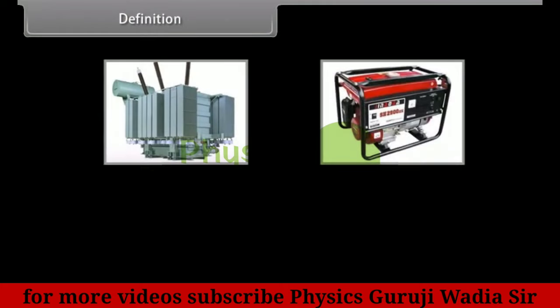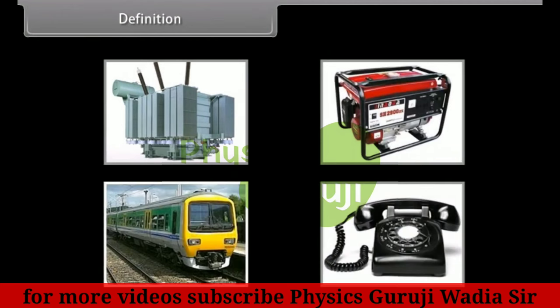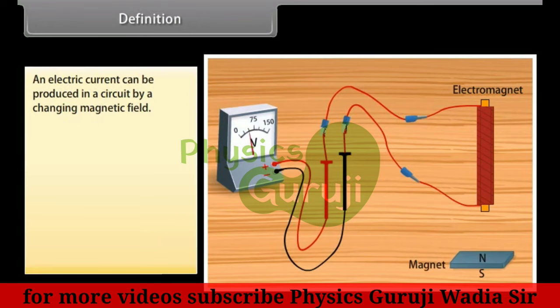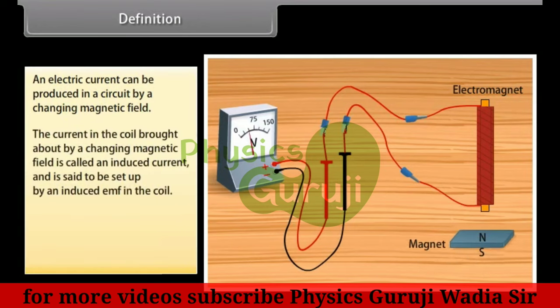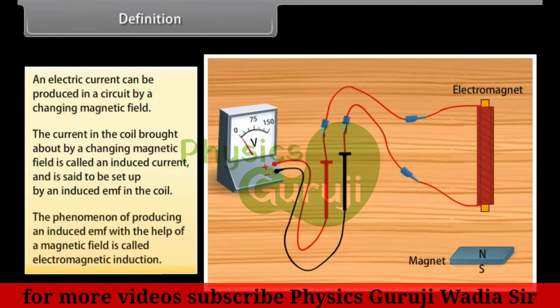Definition: In our everyday life, electromagnetic induction plays a vital role. Transformer, generator, train and telephone are some examples which work on the principle of electromagnetic induction. An electric current produced in a circuit by a changing magnetic field is called an induced current, said to be set up by an induced EMF in the coil. The phenomenon of producing an induced EMF with the help of a magnetic field is called electromagnetic induction.